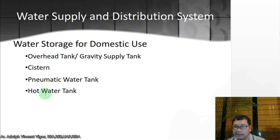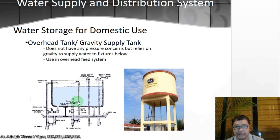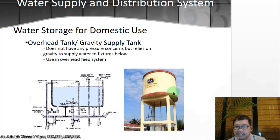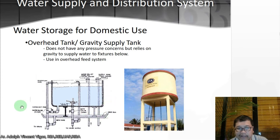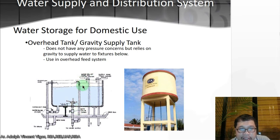You also have the pneumatic water tank and the hot water tank. The overhead tank or gravity supply tank does not have any pressure concerns but relies on gravity to supply water to fixtures below. It uses an overhead feed system. It has an overflow pipe — when the water reaches a certain level it drains. It has an in-house supply line and a ball valve to let water in, plus a drain valve and a drip pipe in case of spillage.